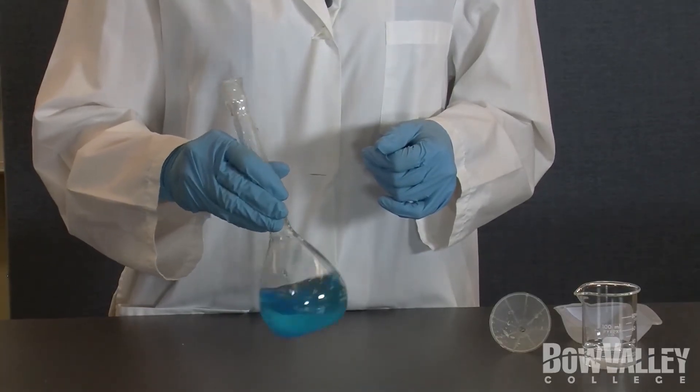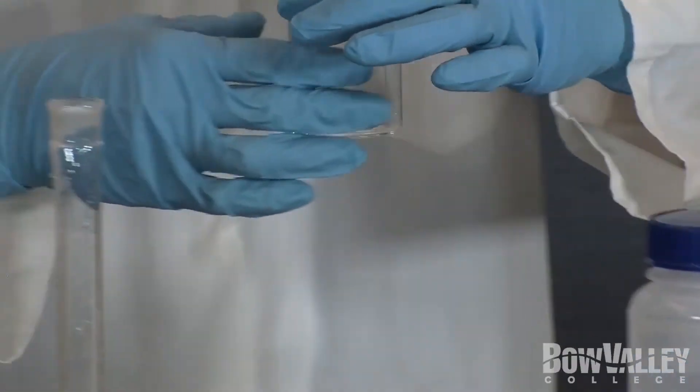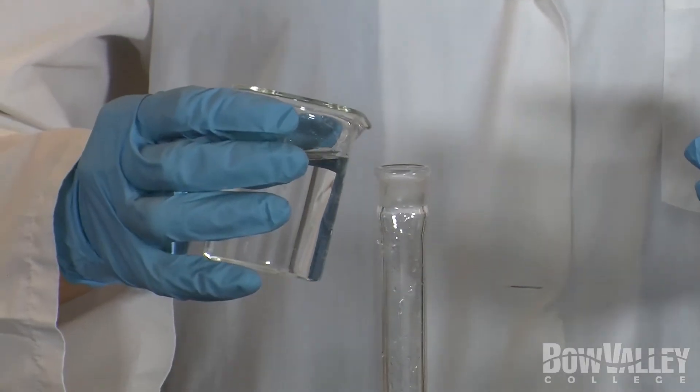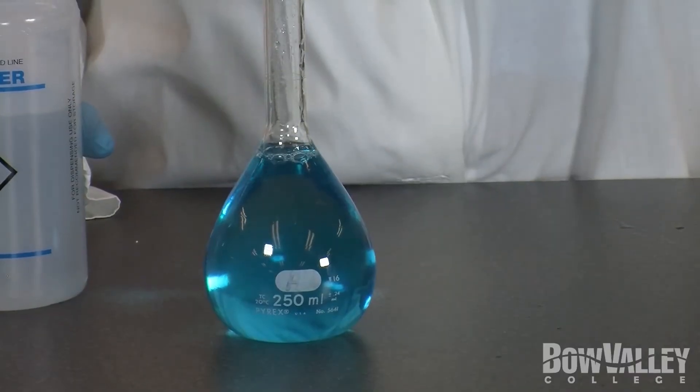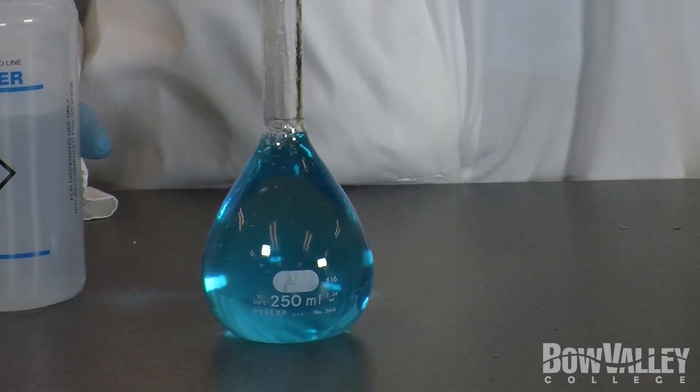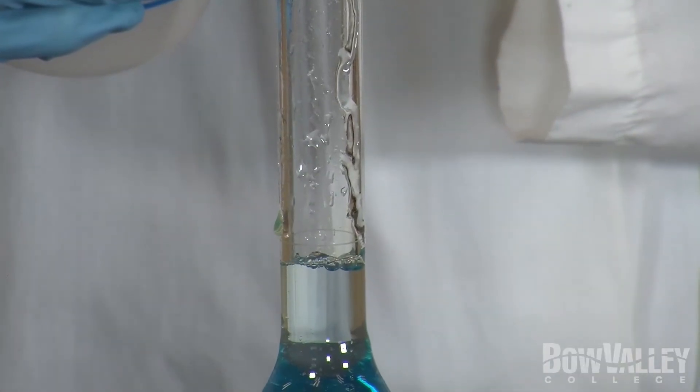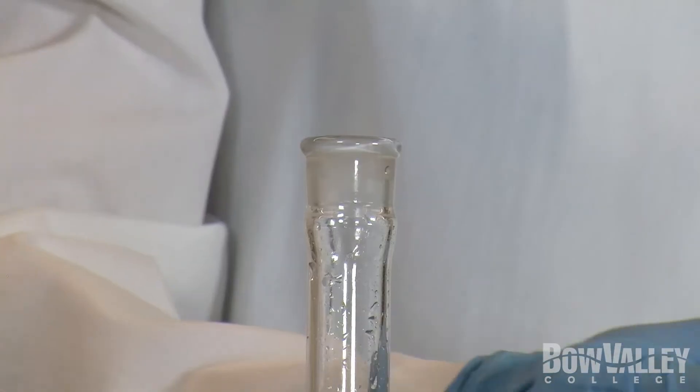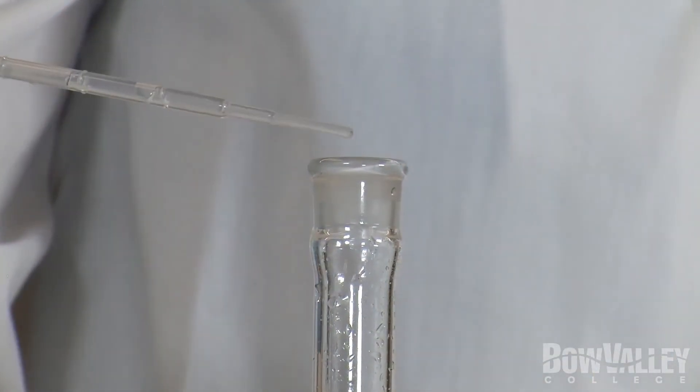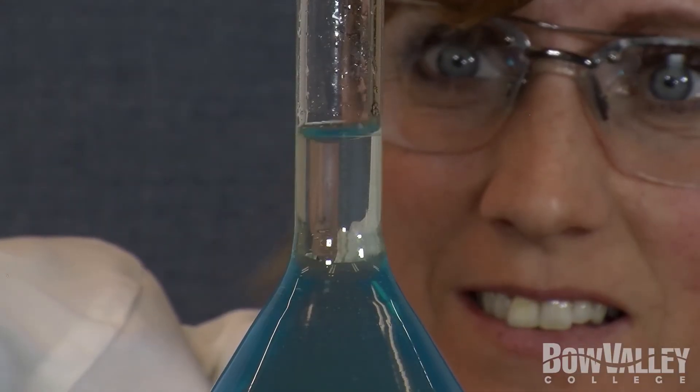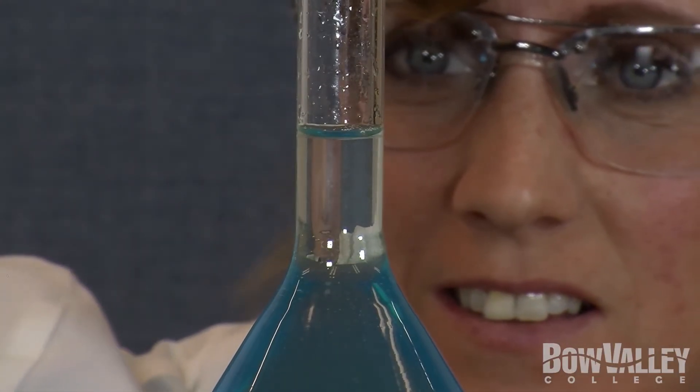Gently swirl the solution until the solid is dissolved. Dilute carefully by adding water from the 100ml beaker until the water level is about 1cm below the graduation line on the neck of the flask. Use a disposable pipette to add the last few drops ensuring that the bottom of the meniscus is at the graduation line.